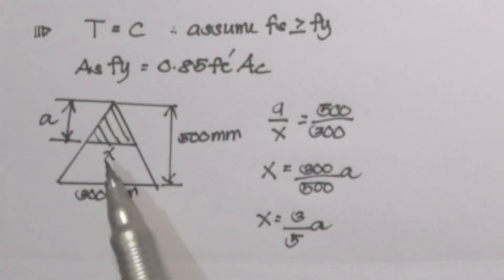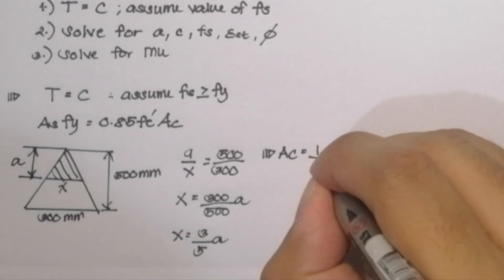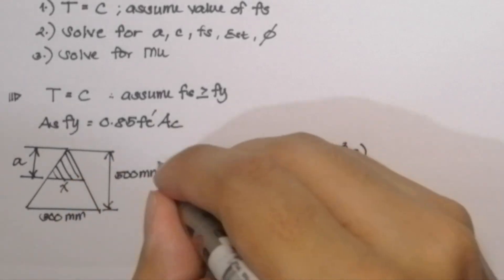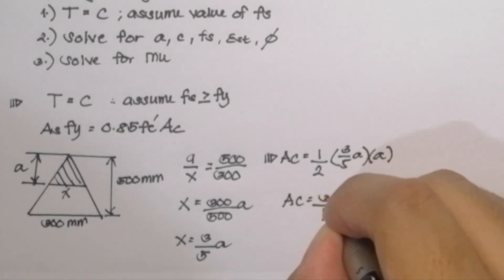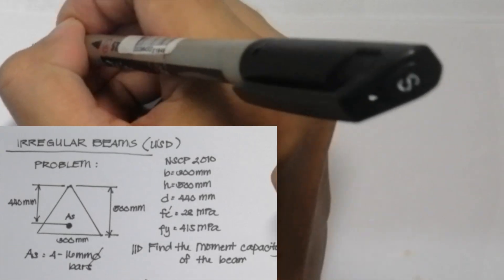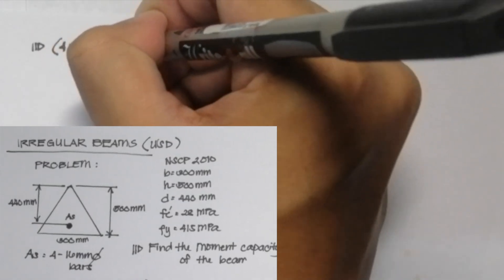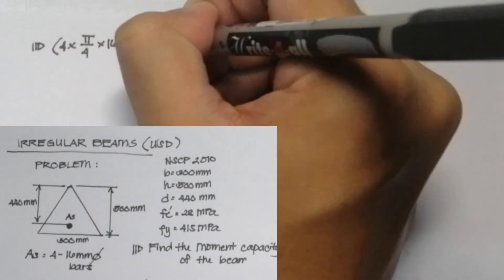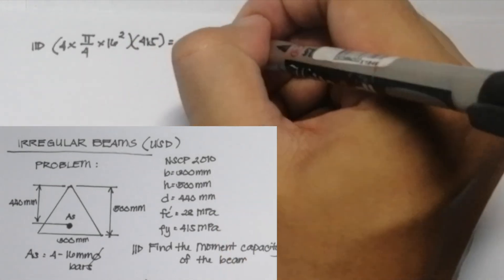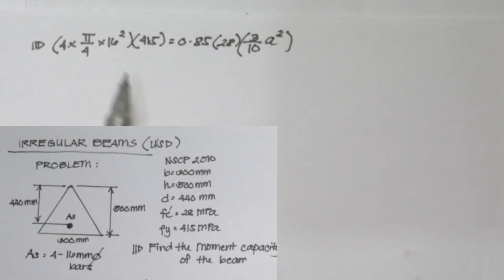Simplifying further, X = (3/5)·A. So the area of the compression block is (1/2)·base·height = (1/2)·(3/5·A)·A = (3/10)·A². We now input this into our working equation: As·Fy = 0.85·fc'·Ac, substituting 4 16mm diameter bars for As, Fy = 415MPa, fc' = 28MPa, and Ac = (3/10)·A².